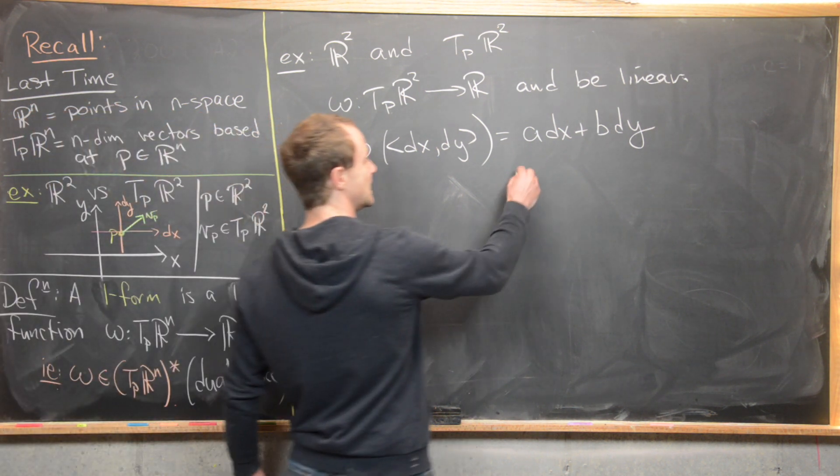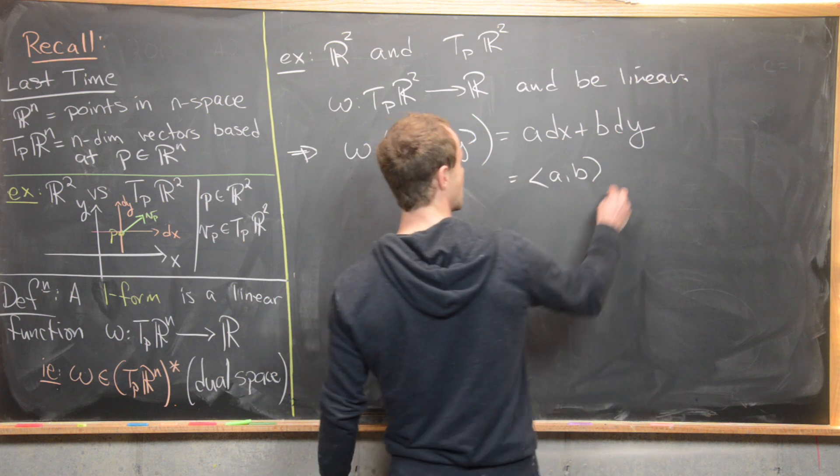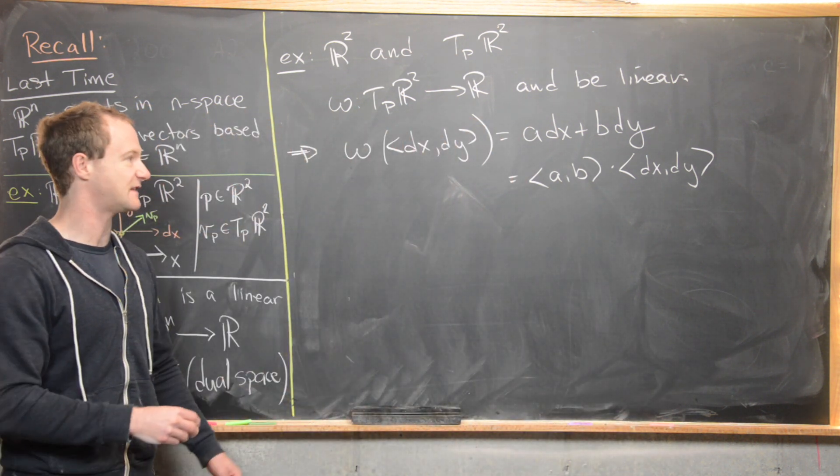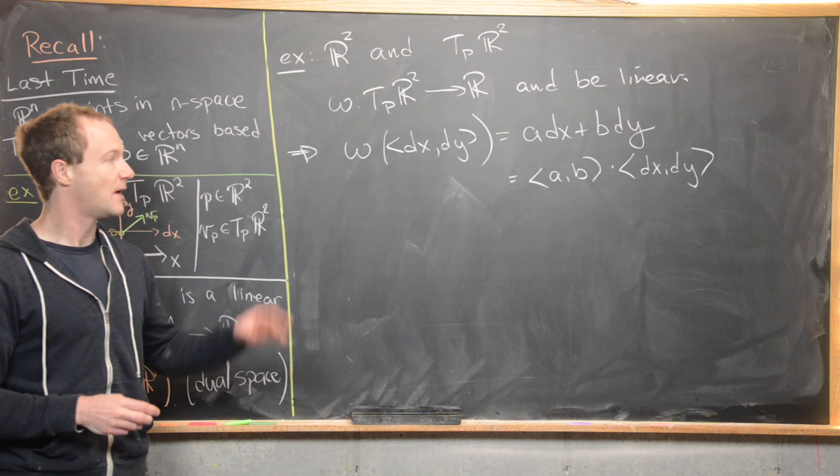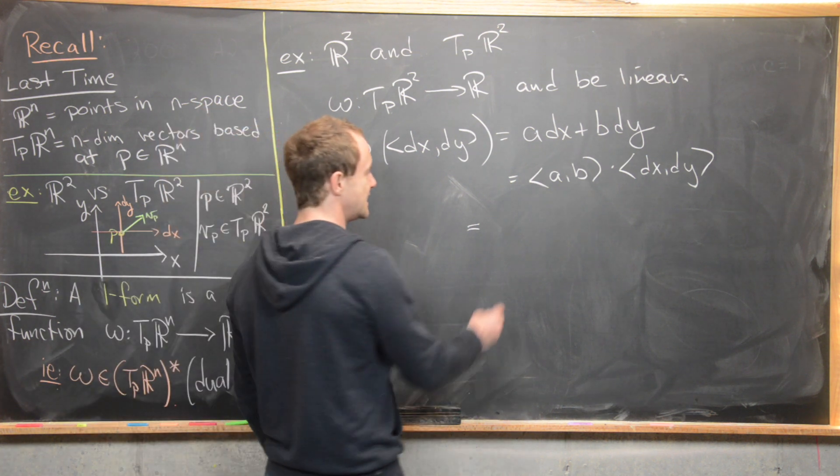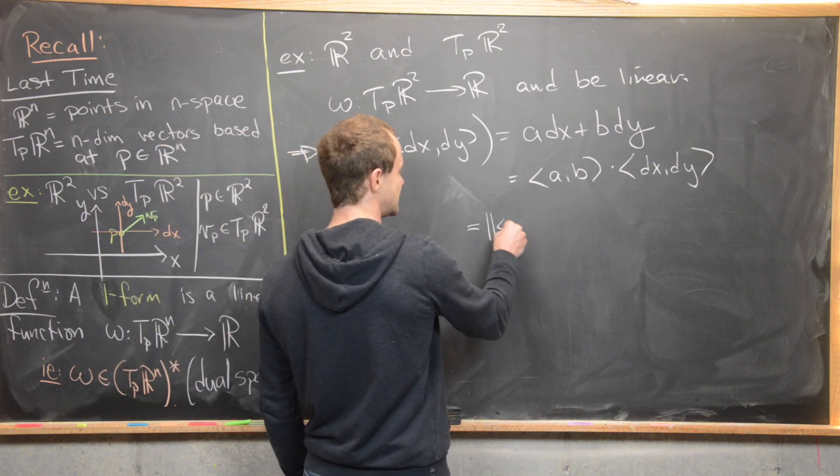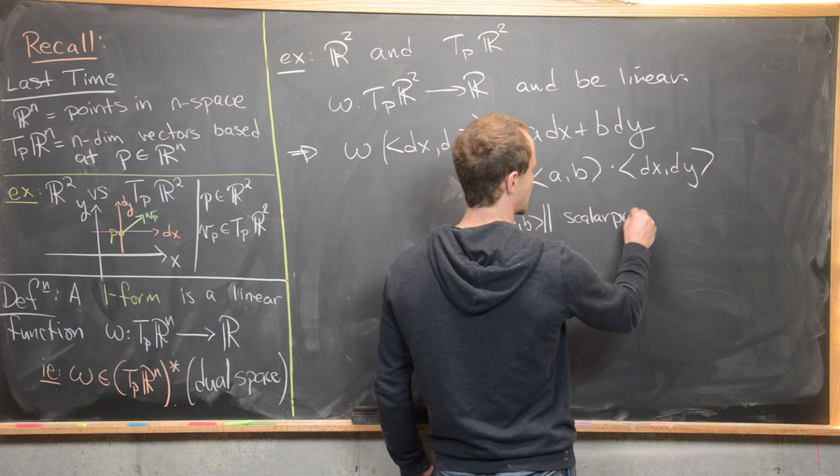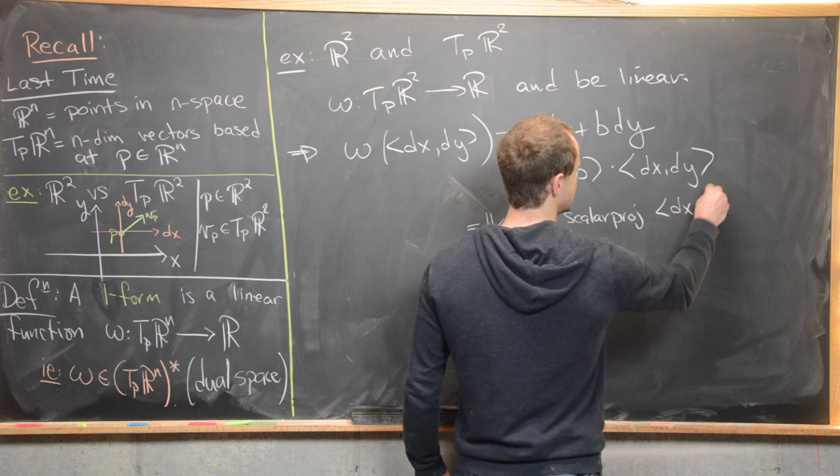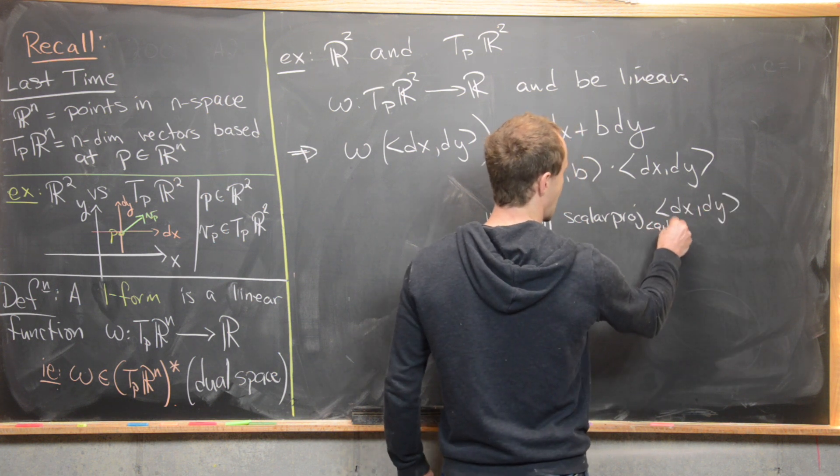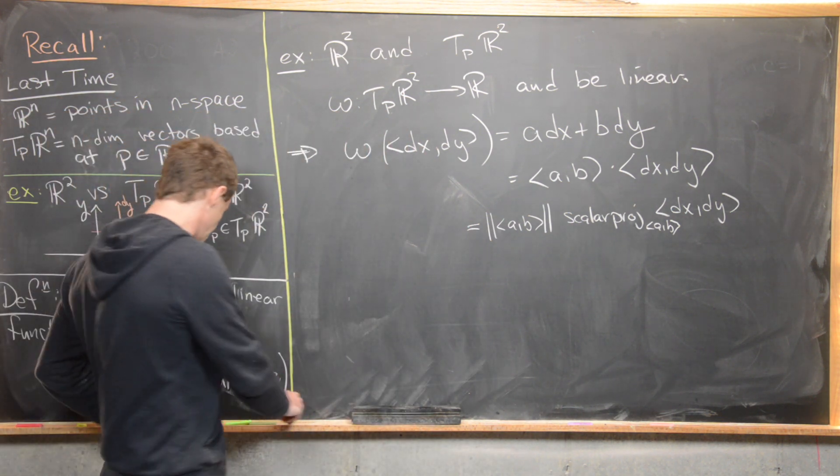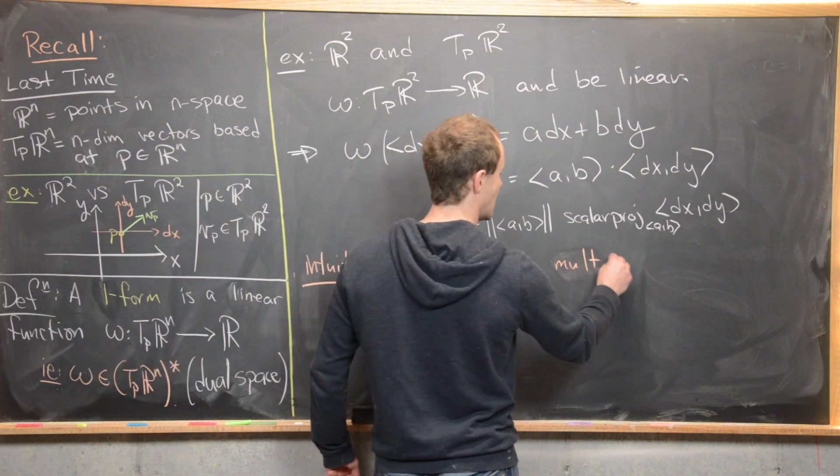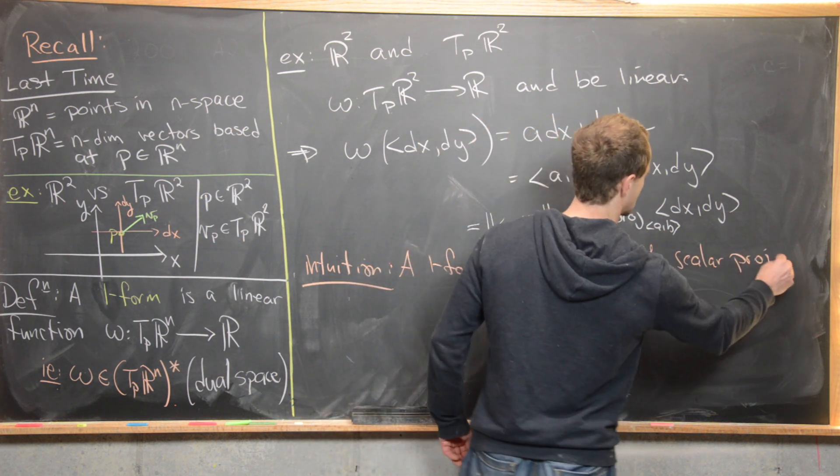Now the next thing I want to notice is that this is really just exactly (a, b) dotted with (dx, dy). That's pretty easy to see that that is just the dot product of those two vectors. But we can write this in a really important way: this is the same thing as the magnitude of our vector (a, b), and then times this scalar projection. So I'll just write scalar projection of (dx, dy) onto (a, b).